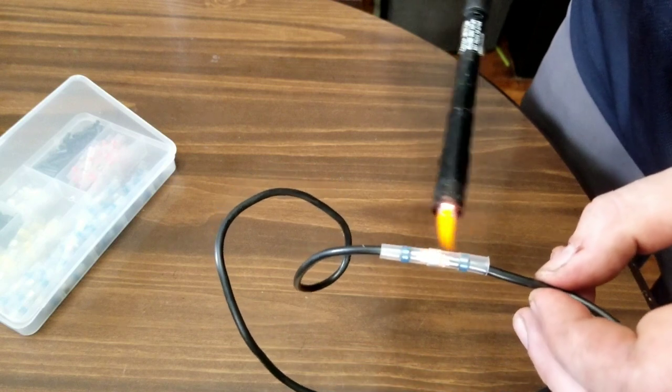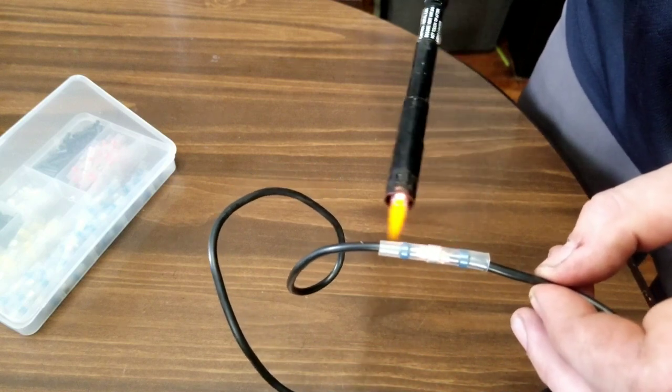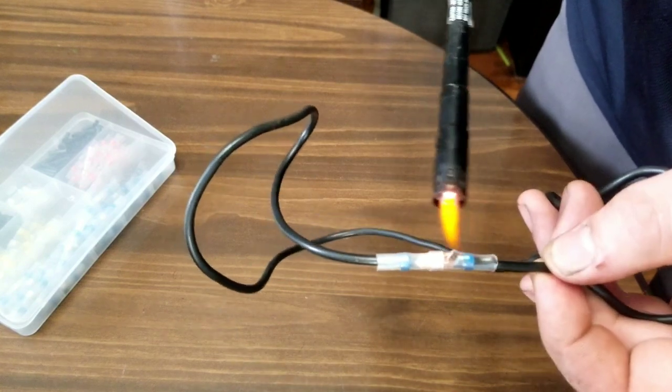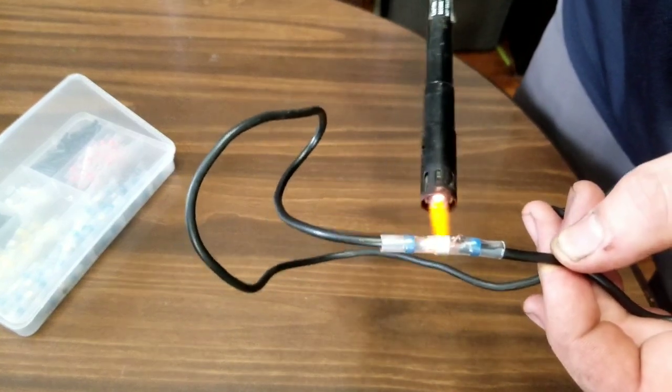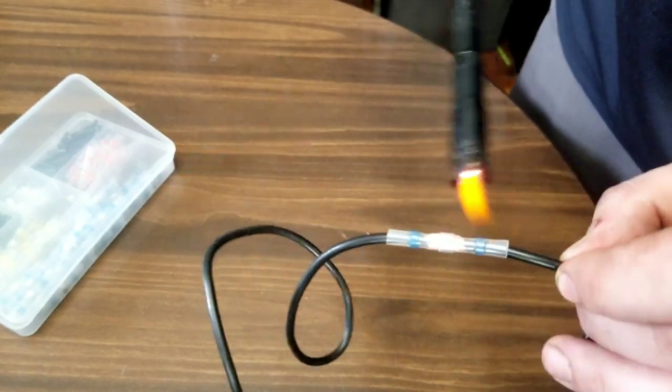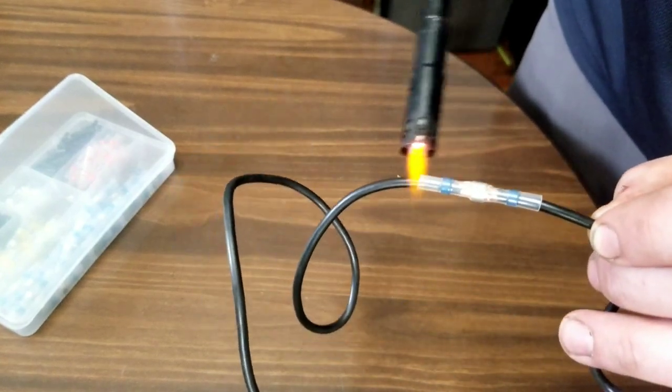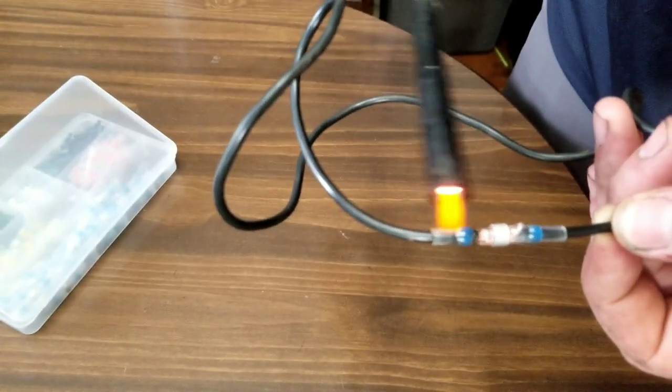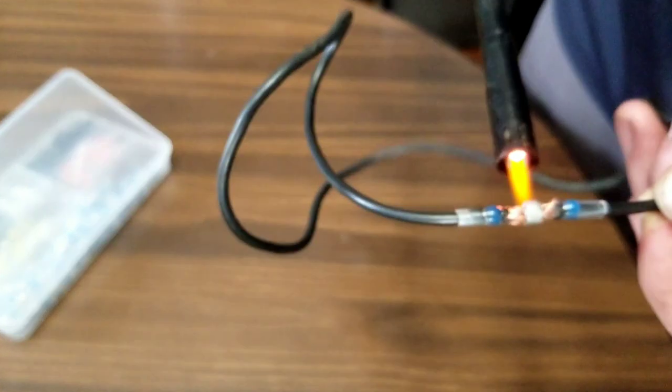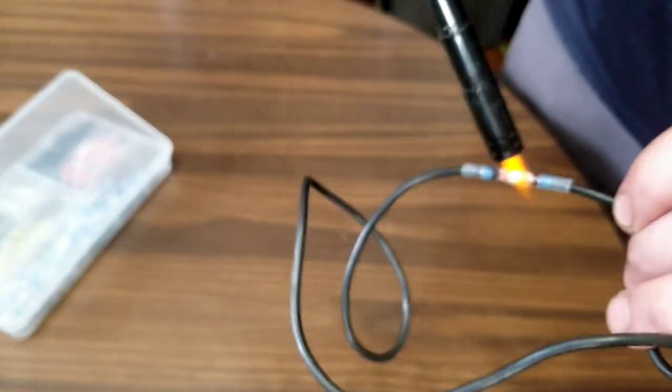So we're gonna heat this up nice and even. Them little blue balls in there, they're blue rings. They're plastic, some kind of plastic or rubber. It melts, it seals it up, it keeps all that water and crap out of your connection. I'm just gonna heat it up nice and even, take your time.